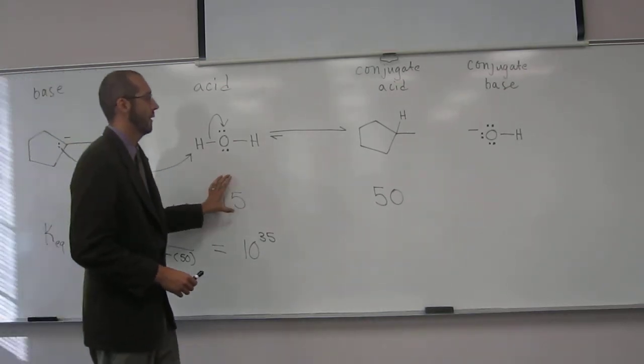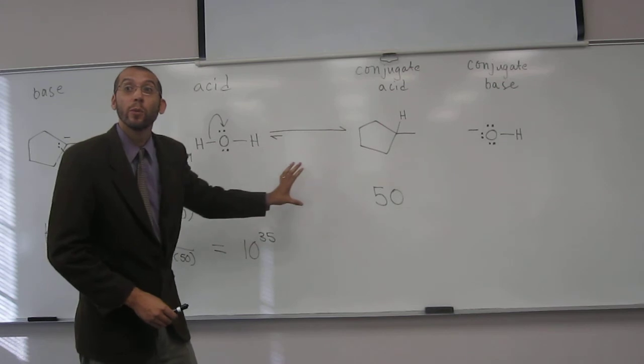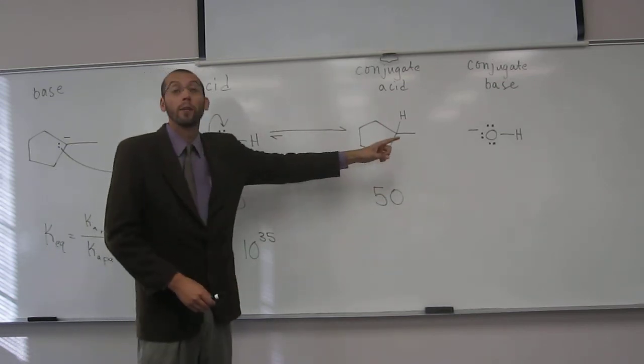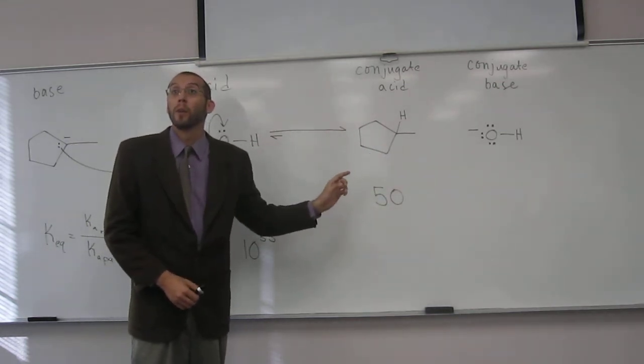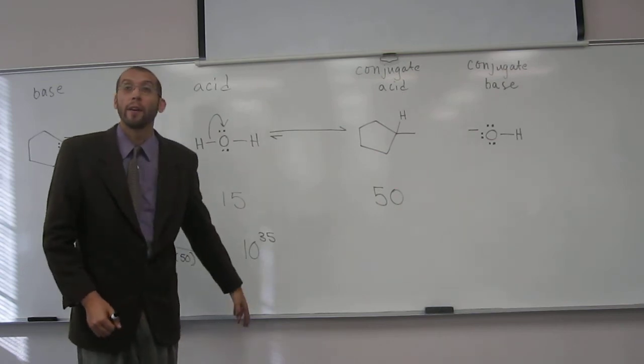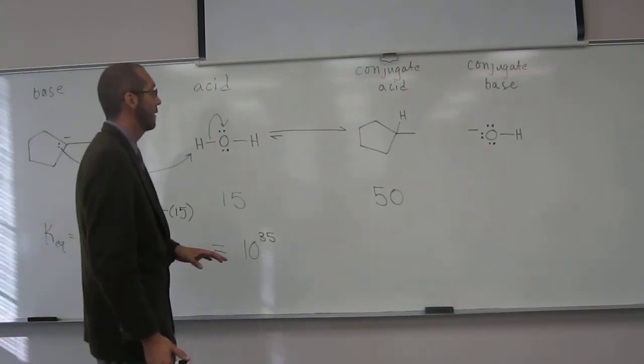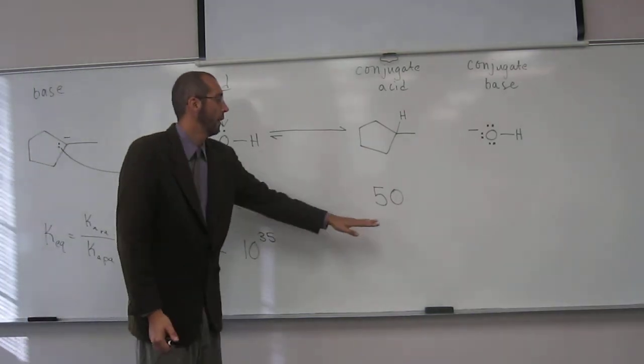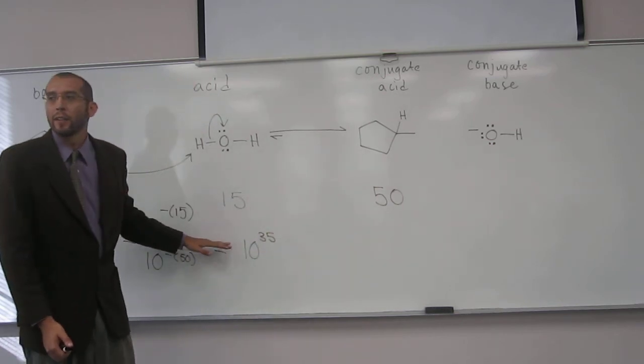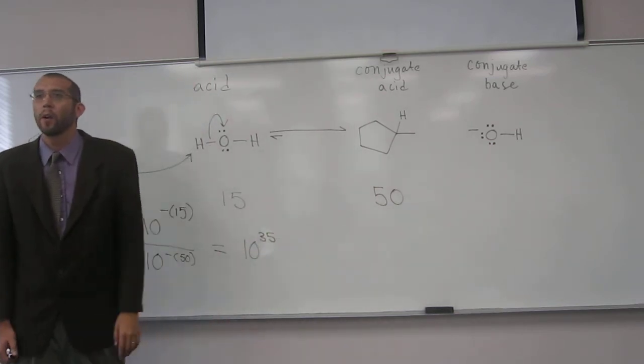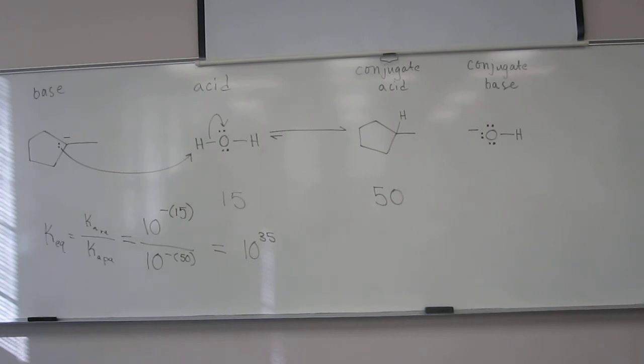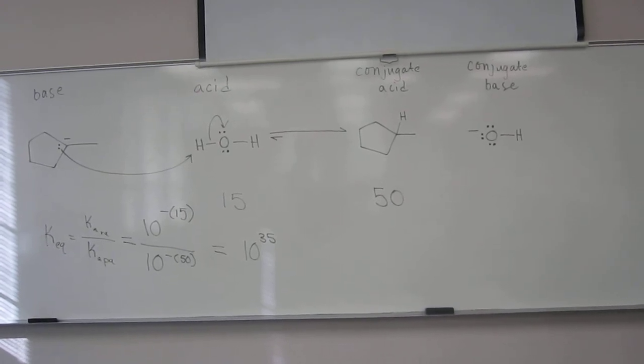So if these pKa values were the same, you would have a reaction in equilibrium. If that were the case, then you would have a KEQ that's one. The other thing you can see is look at the values of the acid, or the pKa values, and determine which way the reaction's going to go. Any other questions on this one? Wonderful. Good job, guys.